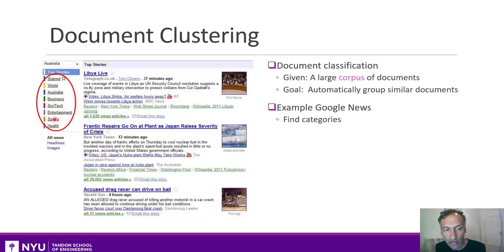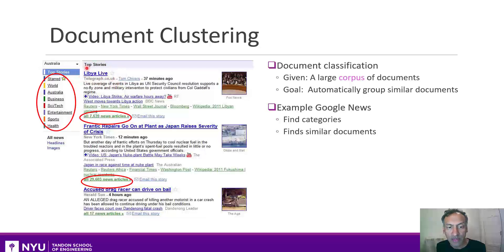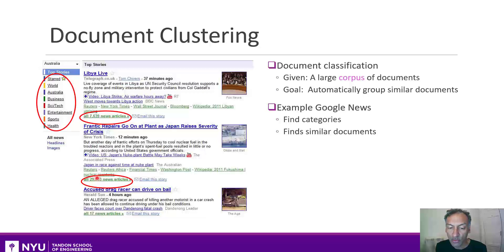These are fixed categories, but what's particularly interesting is this: if you take an article like this one on Libya, you see that it has actually found about 7,600 other articles on the same topic. Similarly, on this article about the nuclear crisis in Japan, there were about 30,000 articles. So somehow, in a single day's news stream of tens or hundreds of thousands of articles, Google has automatically found groups of articles on similar topics and picked representative articles to present on their webpage.